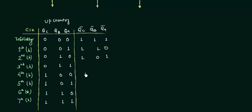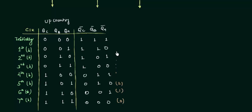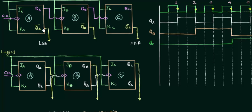Continuing the complements: 1 0 1, 1 0 0, and so on, all the way down to 0 0 0 which is decimal 0. So the sequence goes 0, 1, 2, all the way to 7, but read in reverse — the counting starts from 7 and ends at 0, which is why it is down counting. So in the first circuit we have just taken QA complement, QB complement, and QC complement as our output instead of QA, QB, and QC.